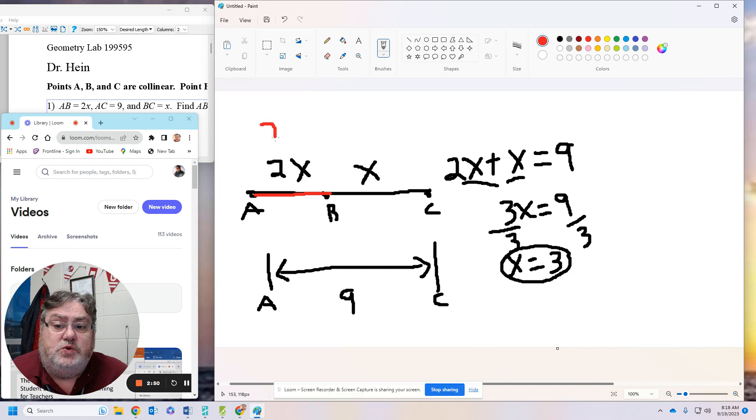So it's 2 times a number. Since X is 3, 2 times 3, 2 times 3 is 6. And I'm going to put my answer in a box.